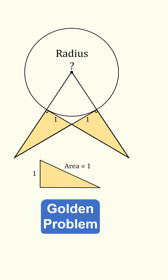Here's a fun geometry problem. We have a circle, we have a couple of tangent line segments with length equal to 1, and we have a couple of golden triangles with area equal to 1. The question is to solve for the radius of the circle.